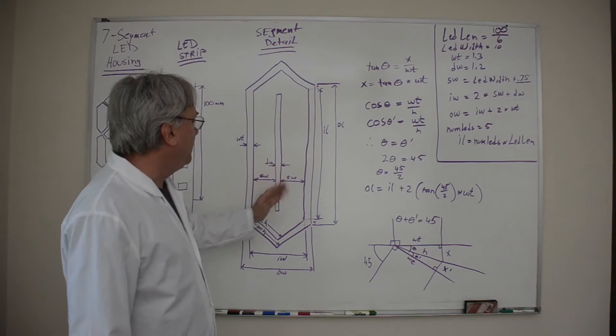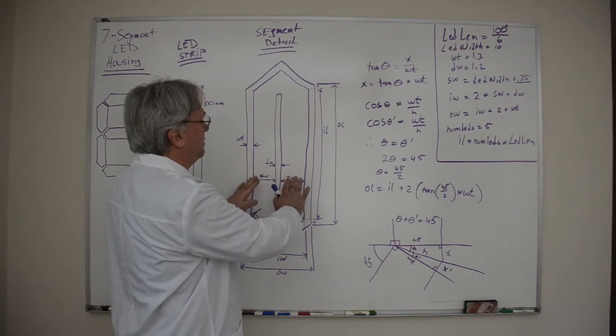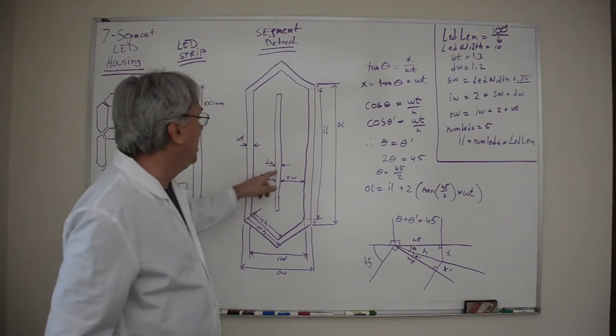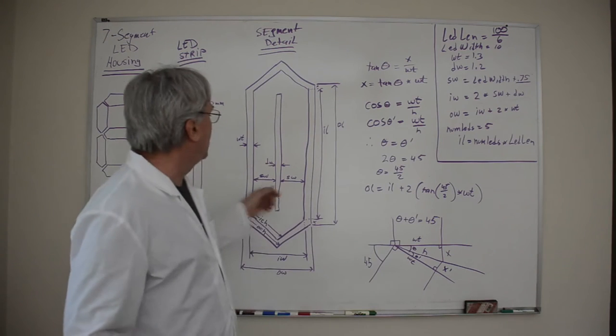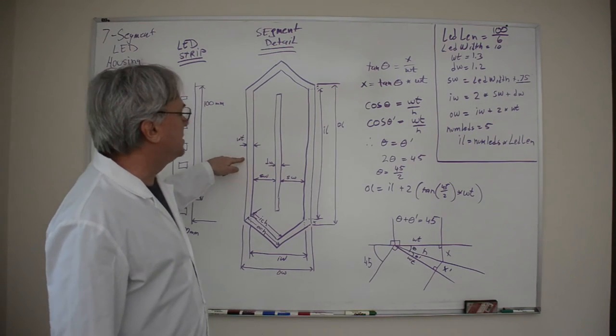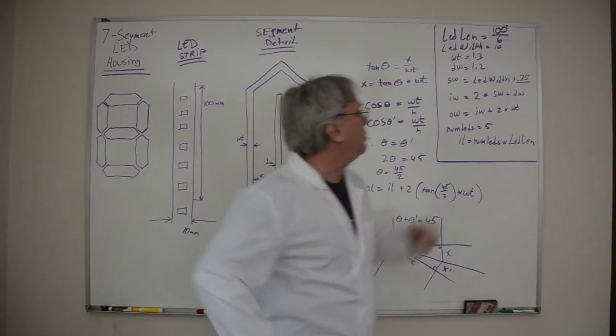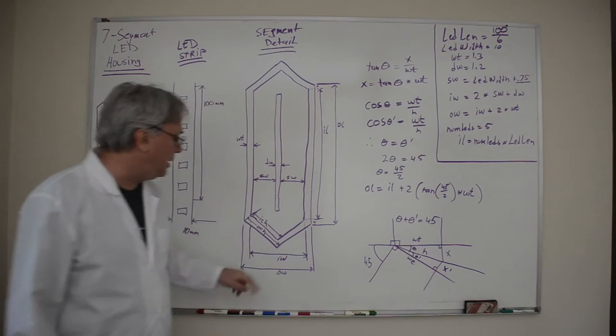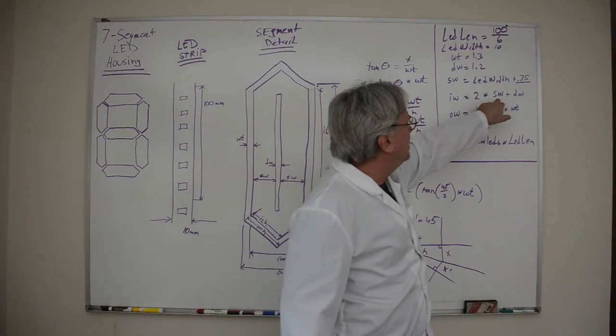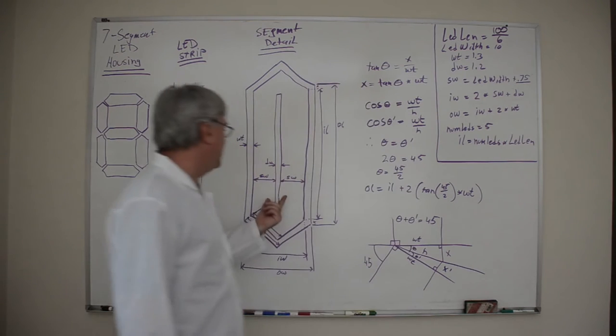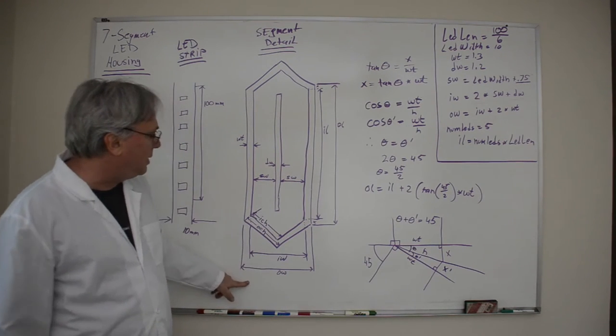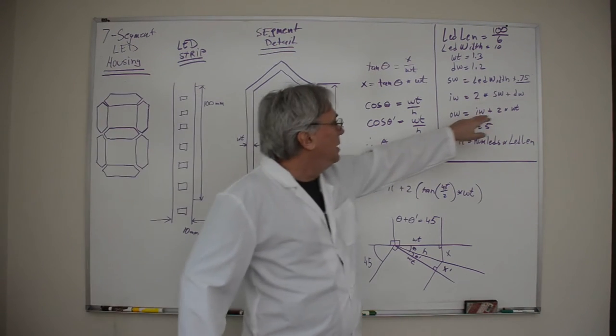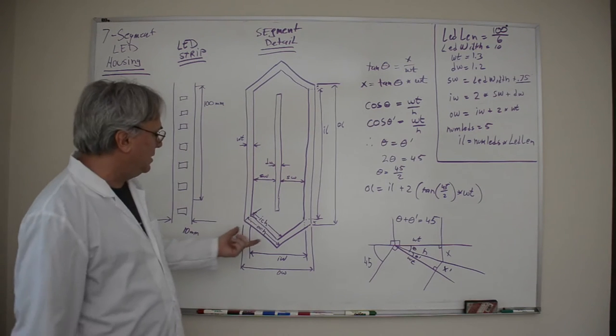So now we can calculate how wide the inside and outside of the segment would be. There's this dividing wall that I want to put between the two strips so that they don't have a chance of falling over each other. I've decided to make that 1.2 millimeters. I've decided to make the outside wall of the segment housing 1.3 millimeters thick. The inside width from here to here IW is two times the strip width plus the dividing width. The outside width is simply going to be the inside width plus two times the wall thickness. Okay let's finish the easy ones.